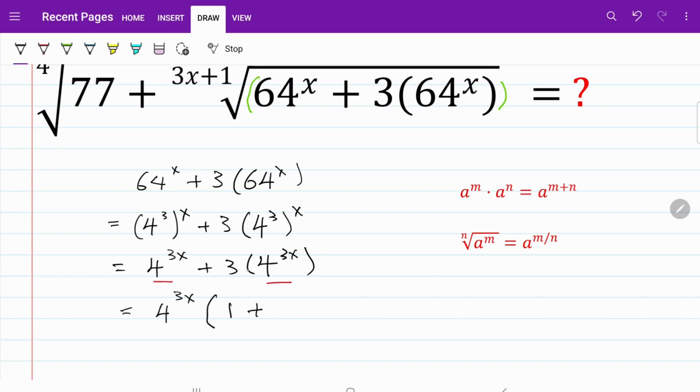Again, 3 multiplied by 4 to the power of 3x divided by 4 to the power of 3x. That's equivalent to 3.